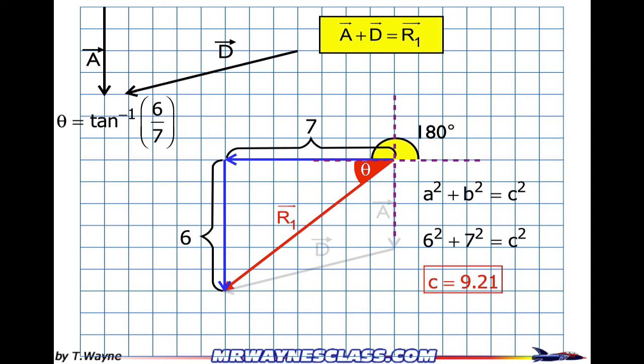Theta is equal to the inverse tangent of 6 over 7. That's opposite over adjacent. When I put that in my calculator in the degree mode, I get 40.6 degrees.